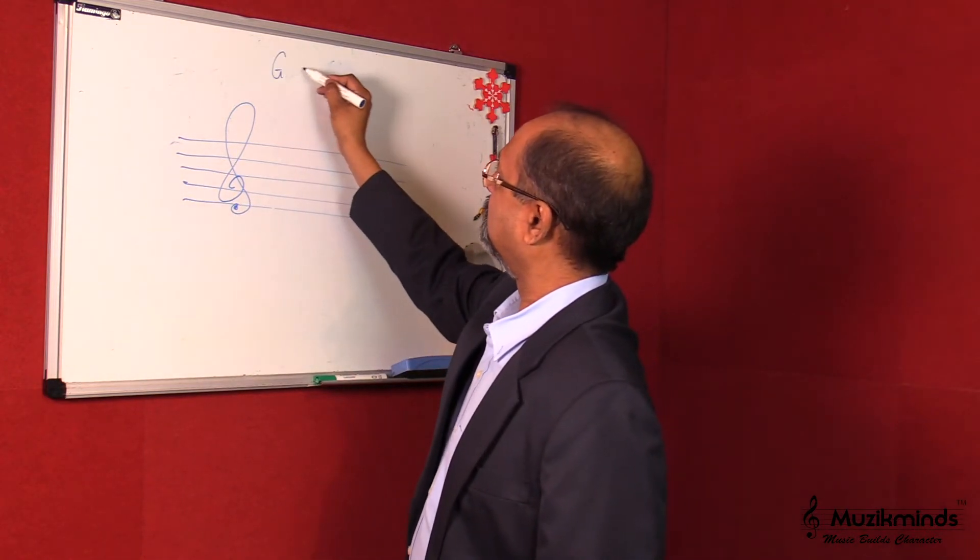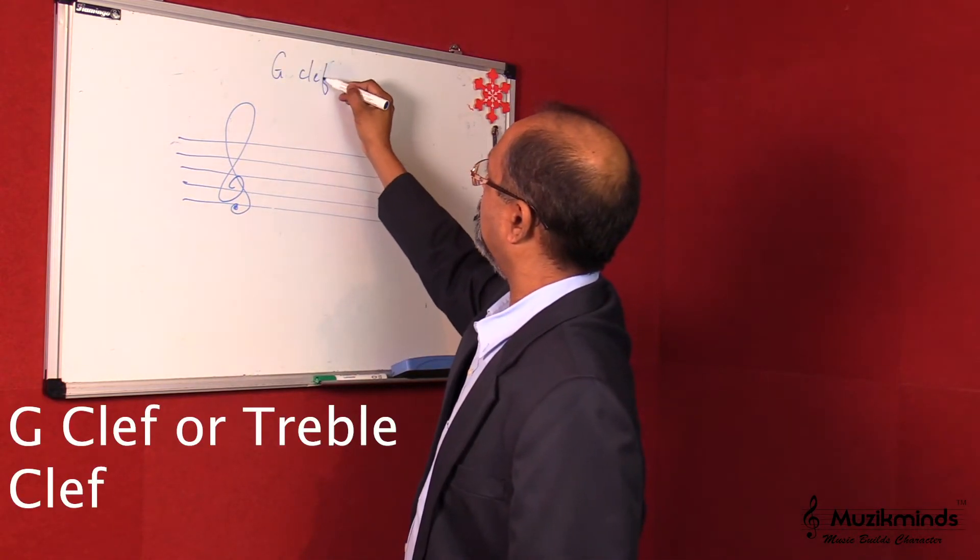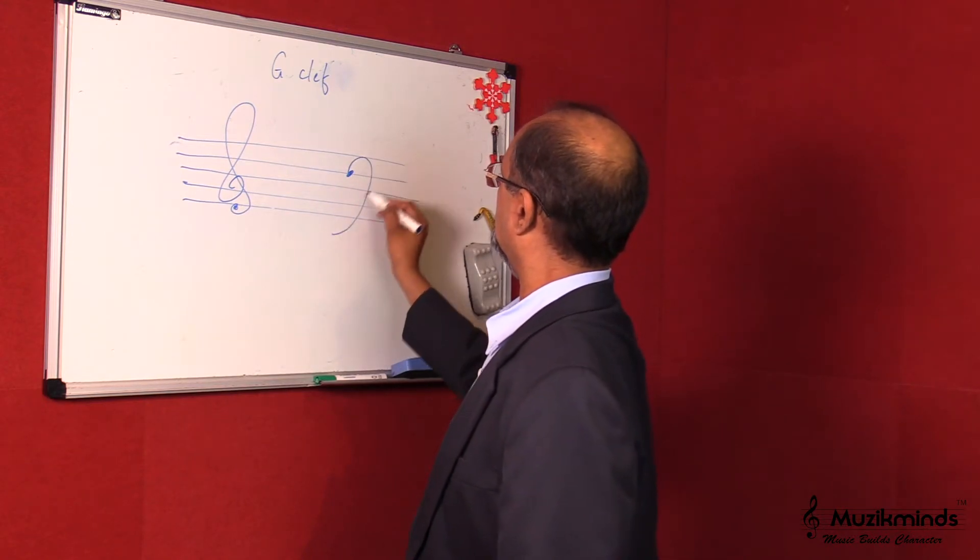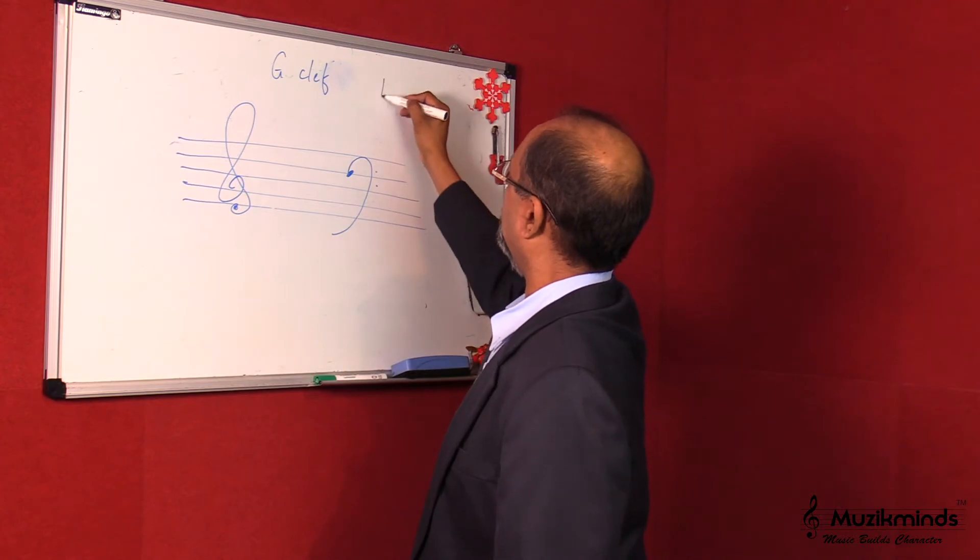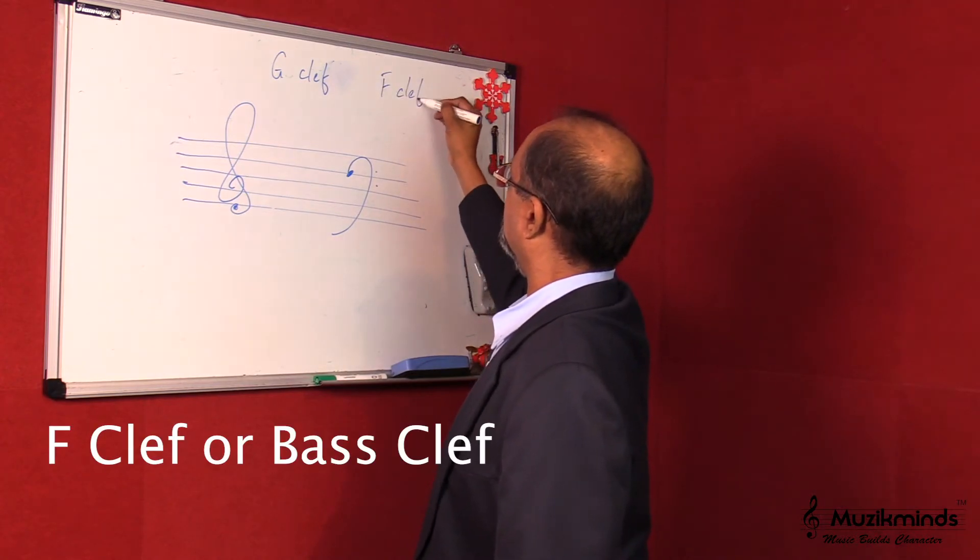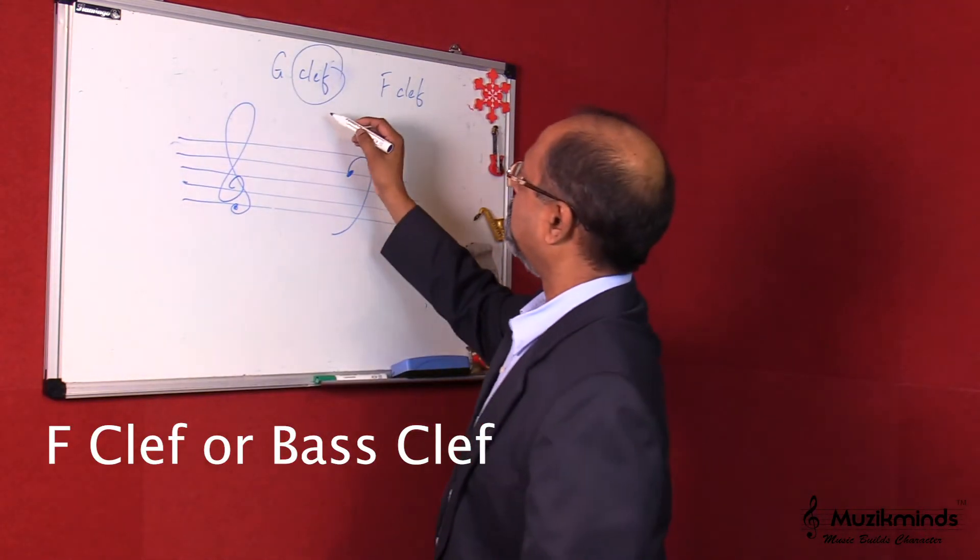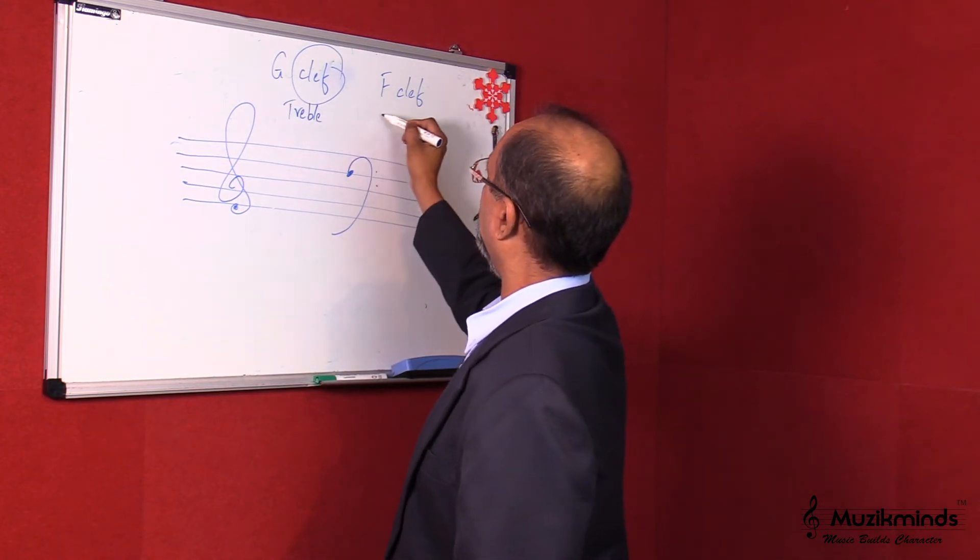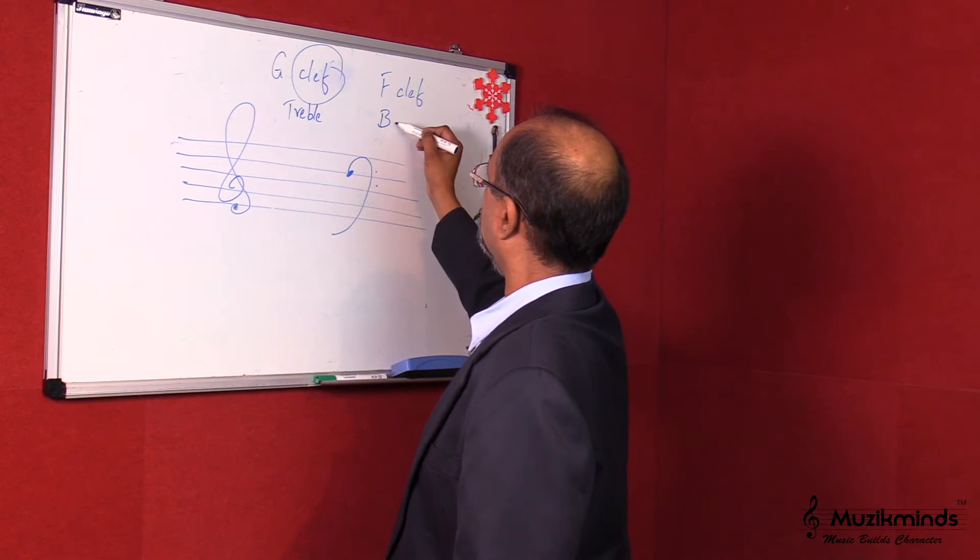This is called the G-clef. And this is called the F-clef. The G-clef is also called the treble clef, and the F-clef is called the bass clef.